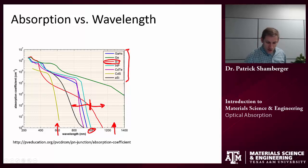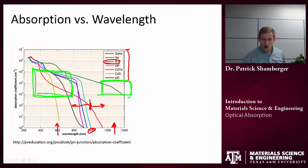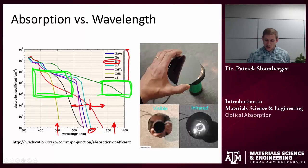So silicon will strongly absorb throughout most of the visible spectrum. But what if we look at something with lower energy than visible light? So IR radiation. This would tell us that silicon would not absorb strongly in the IR spectrum.